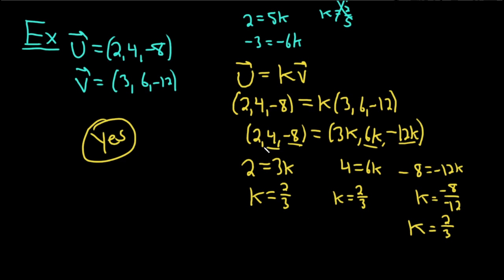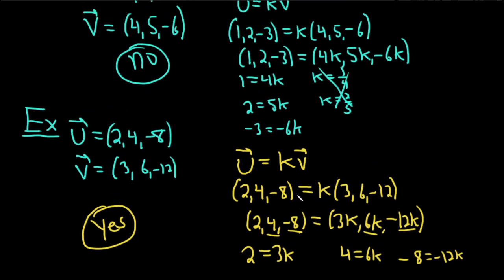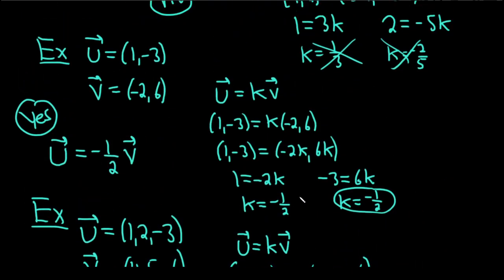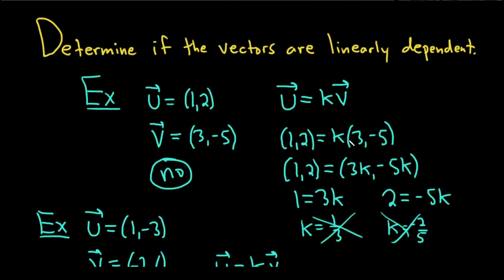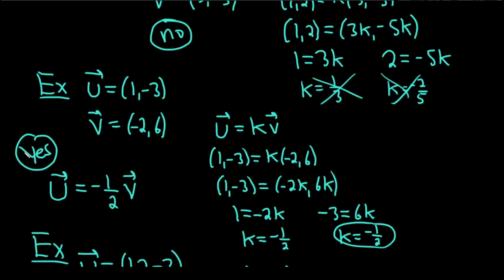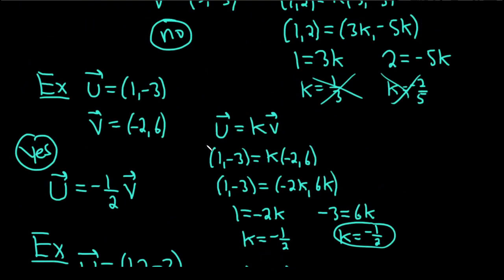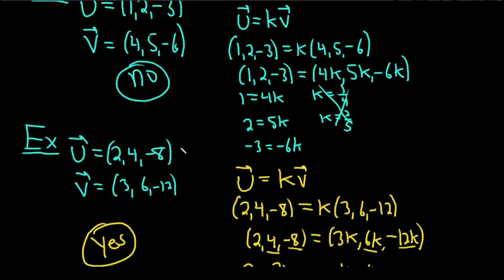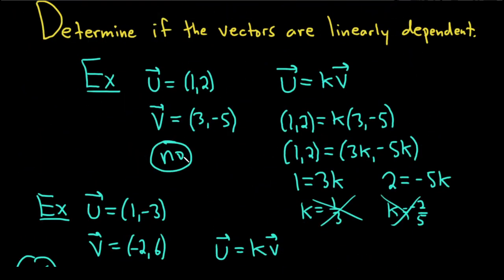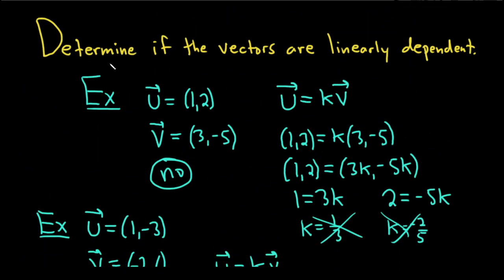Whenever you have two vectors and someone asks if they are dependent, if you can't do it in your head, you can always force them to be multiples of each other. If you find a consistent solution for k — like in the second and fourth examples — the answer is yes, they are dependent. If you can't find a solution for k — like in the first and third examples — the answer is no. Hopefully this has been helpful and you can now answer questions about whether vectors are independent or dependent.